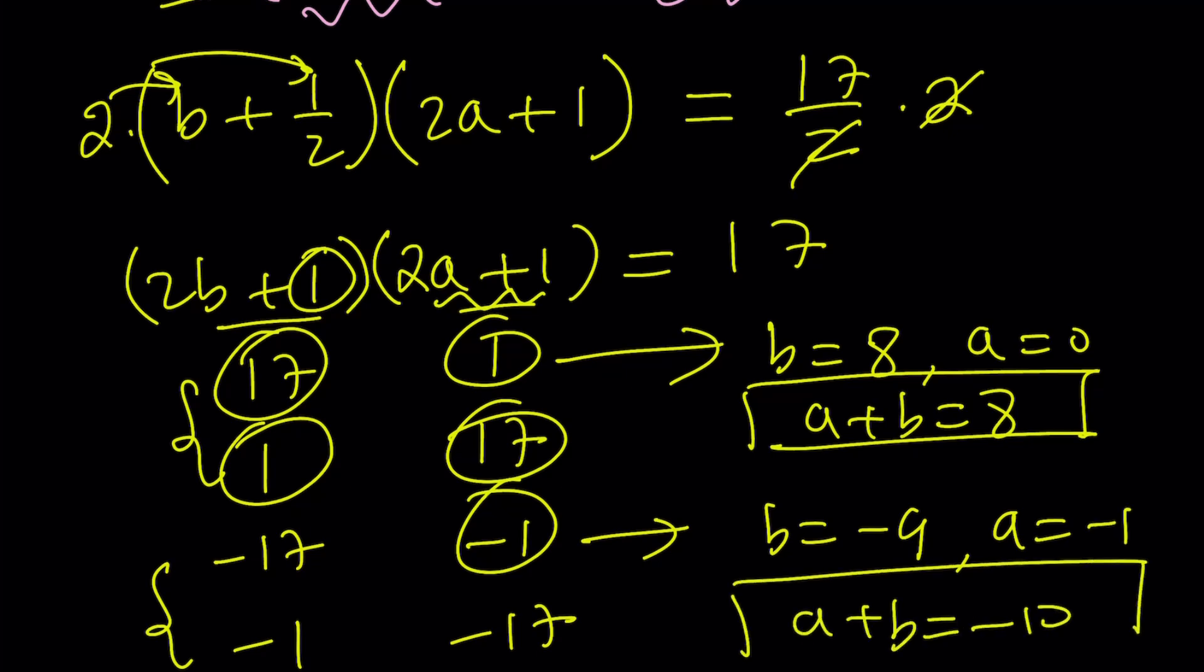So we have two values for a plus b, and those values are 8 and negative 10. Again, if you use the other pair, it won't make a difference.